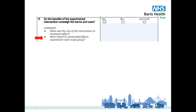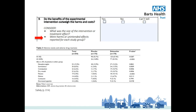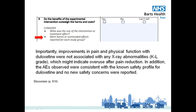We're then asked to look at whether harms or unintended effects were reported for each study group. Table 3 in the safety section lists the various adverse effects with the percentage of patients who experienced them in each group. The discussion section comments on the safety issue. X-ray checks didn't show any drug-related abnormalities. The authors conclude that their findings are in line with the known safety profile for duloxetine and no new safety concerns were reported.